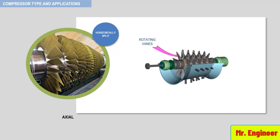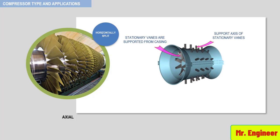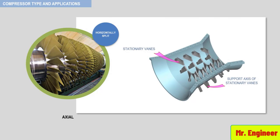Here the same view is shown but this time with the casing completely removed. The rows of rotating vanes are seen here at a different angle. In this view, the stationary vanes which are supported from the casing are seen from one end, and now you can see them without the casing. Here you can see the rows of stationary vanes in relation to the bottom casing of the compressor.